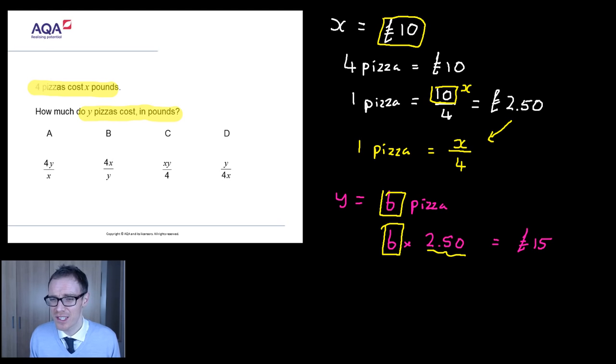So instead of doing six multiplied by two pound fifty, I'm going to do y, which is my total amount of pizzas, times by my cost of one pizza, which is x divided by four.